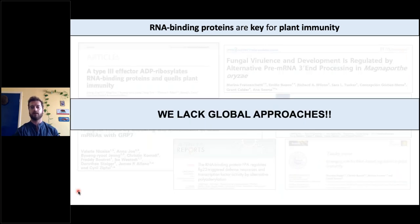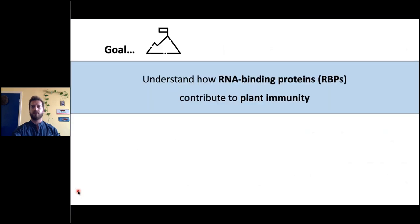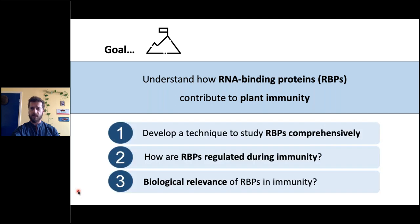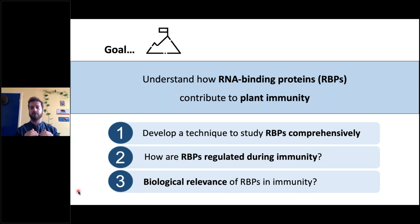We're lacking global perspectives. So our main objective is to understand how RNA binding proteins contribute to plant immunity. We've subdivided this into smaller goals. The first was to develop a technique that allows us to globally study RNA binding proteins. Then from that, we'll study how RBPs are regulated during plant immunity, and whether these regulations are actually relevant for plant immunity.